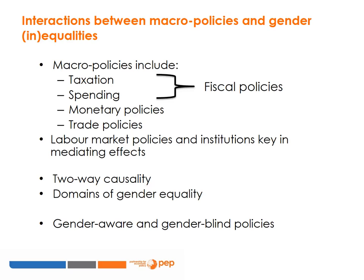The next slides introduce the concept of two-way causality between gender relations and macroeconomic policies, and illustrate different domains of gender inequality. Both conceptualisations are useful for understanding how gender inequalities and macroeconomic policies interact. Economic policies that do not take account of the gendered features of an economy, and are formulated without consideration of the possible interactions between gender inequalities and specific interventions, are said to be gender-blind.